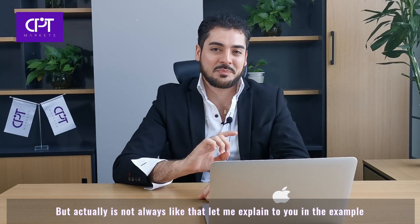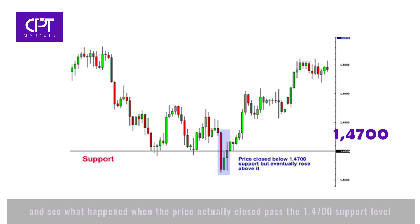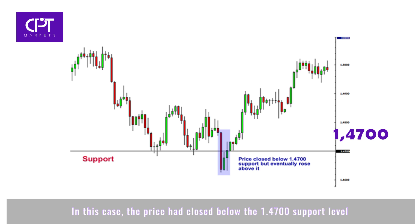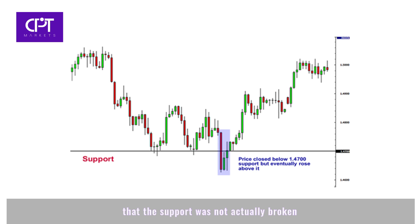Let me explain with this example. Let's take the same example from above and see what happened when the price actually closed past the 1.4700 support level. In this case, the price had closed below the 1.4700 support level but ended up rising back up above it. Looking at the chart now, you can visually see and come to the conclusion that the support was not actually broken — it is still very much intact and now even stronger.